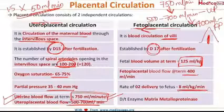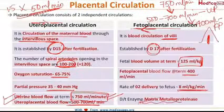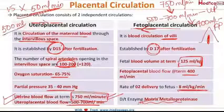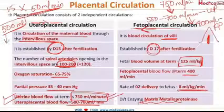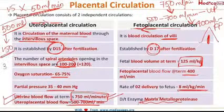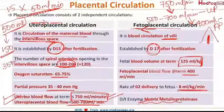Matrix metalloproteinases are involved in fetoplacental circulation. The volume of blood in the mature placenta is 500 ml. The placenta weighs 500 grams at term and contains 500 ml of blood, divided into 150 ml in the intervillous space and 350 ml in the villus system.